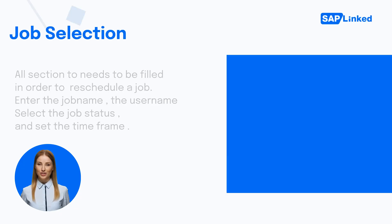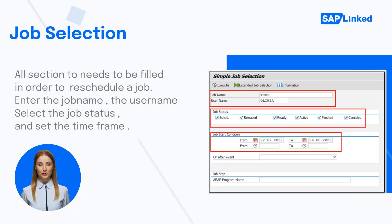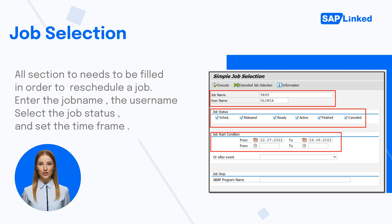Enter the name of the job and the user who scheduled it. If you don't know the job name or the username, you can enter a star and all jobs will be shown. Then choose the status. You can only pick Released or Ready status in order to reschedule the job.